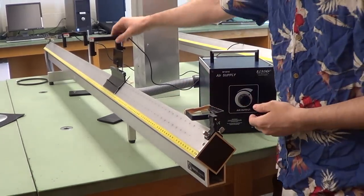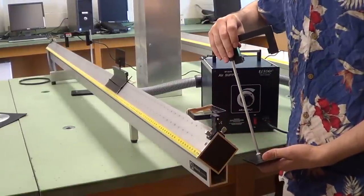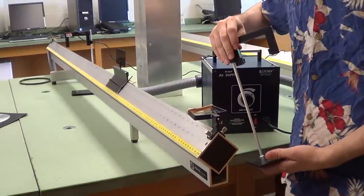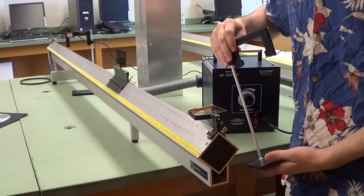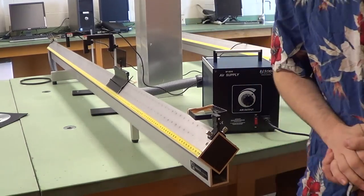Finally, we have the photo gates which are basically timers in this case, but occasionally they determine speed and velocity according to the experiment. For this particular experiment, we'll be calculating the elapsed time between two photo gates.